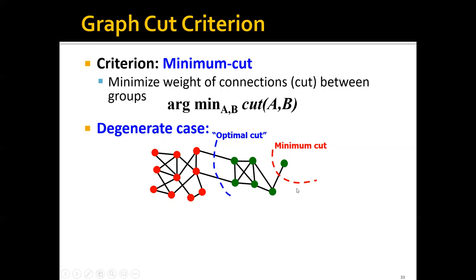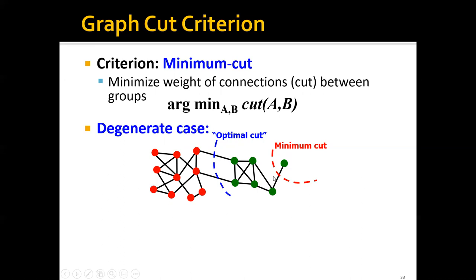Basically, the algorithm will assign this single node as one group and all the other nodes as another group, which is obviously not a very good partition.